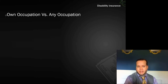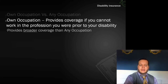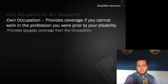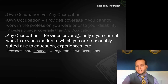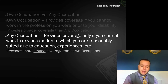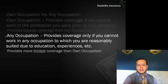A key point about disability insurance is that policies tend to fall into two broad categories: own occupation coverage and any occupation coverage. Own occupation coverage gives you coverage only if you can't work in the job you were doing before you were disabled. Any occupation coverage provides coverage only if you can't work in any occupation to which you were reasonably suited. Even though 'any' sounds like a broad term, any occupation coverage actually gives you a much narrower range of coverage than own occupation.